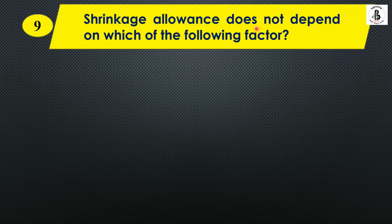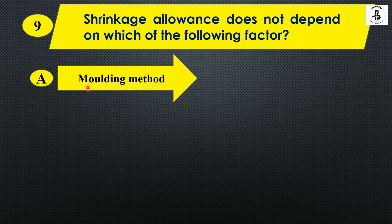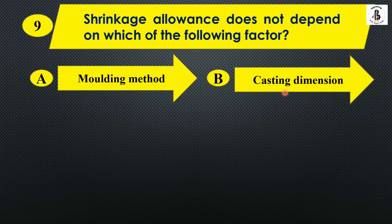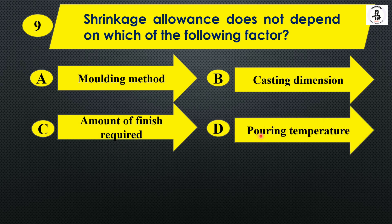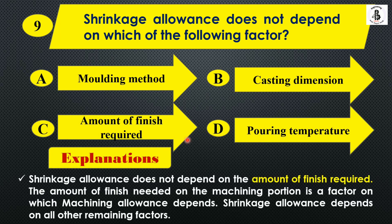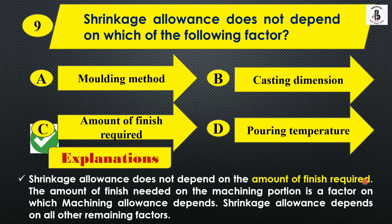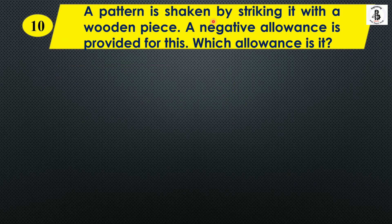Question nine: Shrinkage allowance does not depend on which of the following factors? Option A: Molding method, Option B: Casting dimensions, Option C: Amount of finish required, Option D: Pouring temperature. Shrinkage allowance does not depend on the amount of finish required, as that is a factor on which machining allowance depends. Shrinkage allowance depends on all other remaining factors. The right answer is Option C: Amount of finish required.